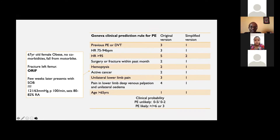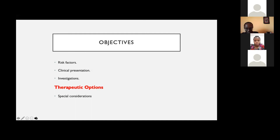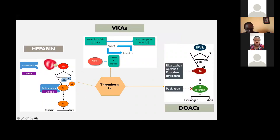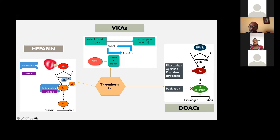There's also another score used for PE that looks at similar parameters. This is how we use these scores in a clinical setting: where PE is unlikely, you do your D-dimer. If all that you pick up from today is having that high index of suspicion and being able to do that initial workup, then I think I would have done my work well, because that's where many patients are missed — we are simply not thinking about it.